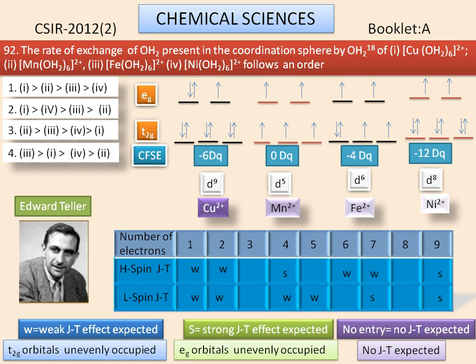So the order, i.e., the rate of exchange of OH2 present in the coordination sphere by OH2-18, follows the order of copper 2+ is greater than Mn2+ is greater than Fe2+ is greater than nickel 2+ complexes. So the correct option is the first one. Thank you.